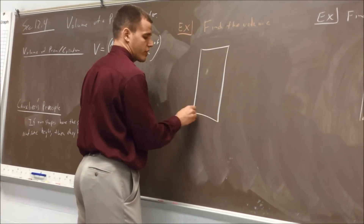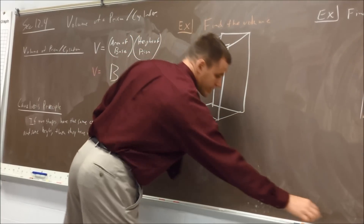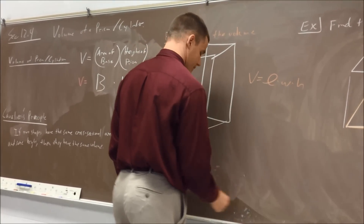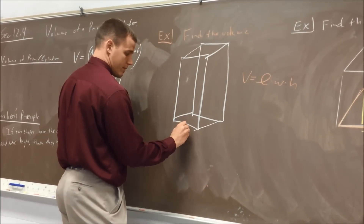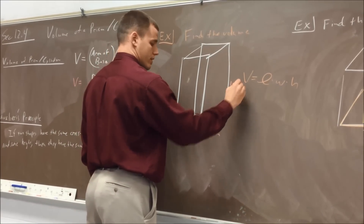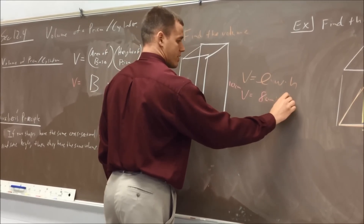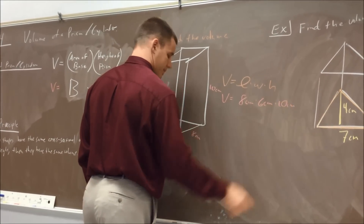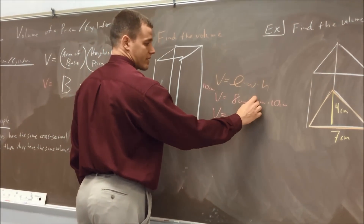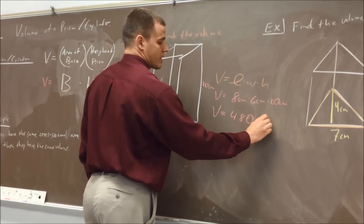Volume, of course, is the number of little cubes you can fit in something. For a box, everybody knows the formula: volume is length times width times height. So if this were 6 centimeters, this were 8 centimeters, and this were 10 centimeters, I would do 8 times 6 times 10. That's 48 times 10, which is 480 cubic centimeters.